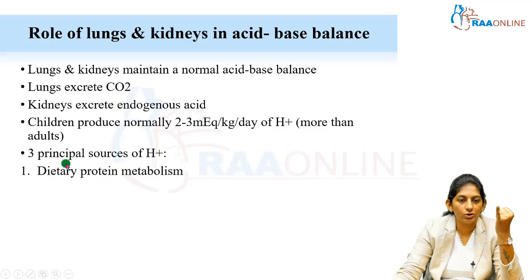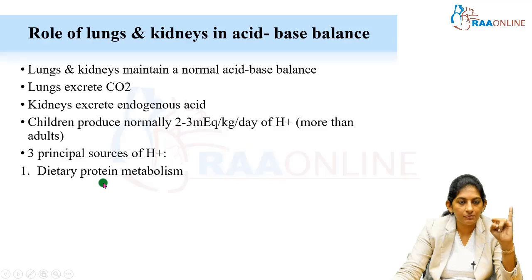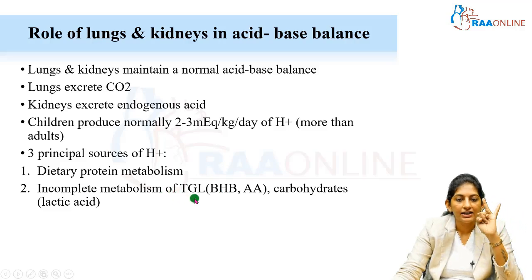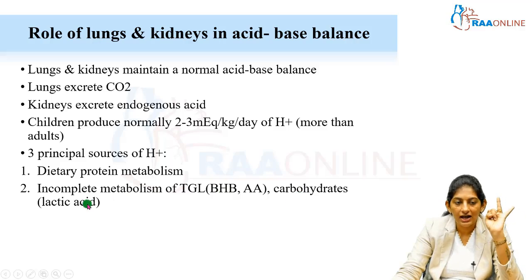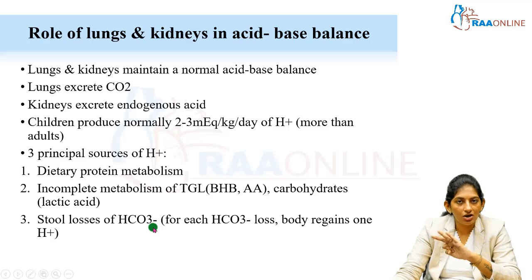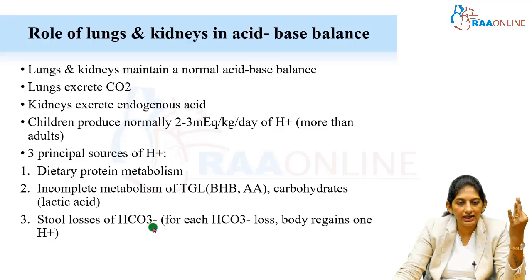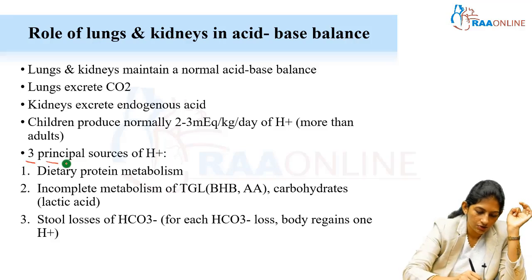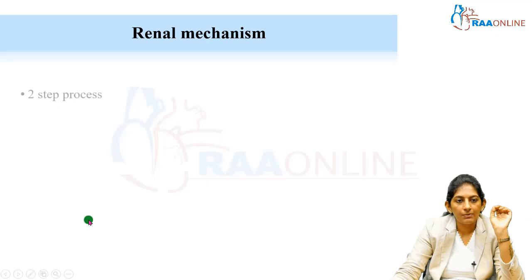There are three principal sources of H+. First, from dietary protein metabolism. Second, from the incomplete metabolism of triglycerides and carbohydrates — triglycerides give rise to acetylacetic acid and beta-hydroxybutyrate, while carbohydrate metabolism generates lactic acid. Third, loss of bicarbonate — whenever each bicarbonate is lost, one H+ is regained inside the system.